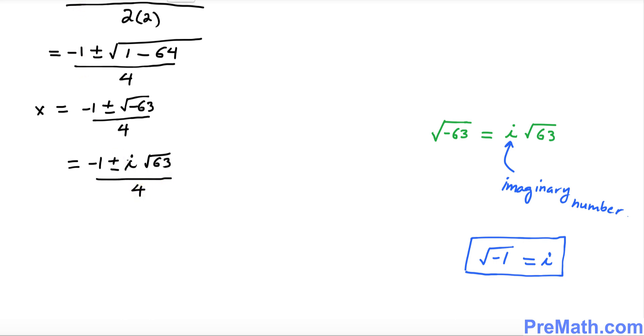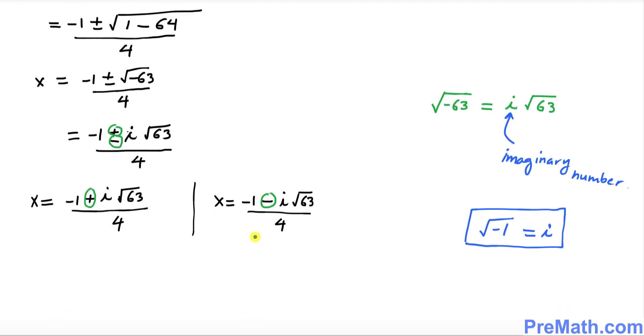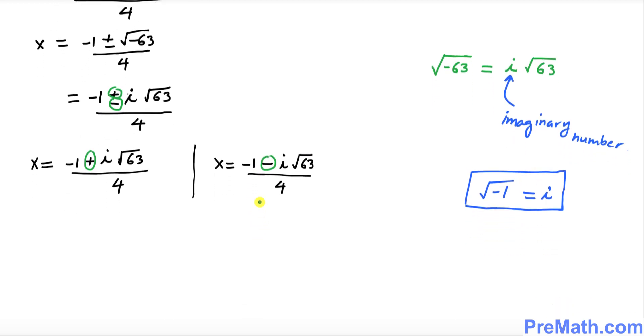Now we're going to go ahead and split these numbers along these two signs. So thus our solution sets are right here as we split them up, one with a plus sign over here and one with a negative sign.